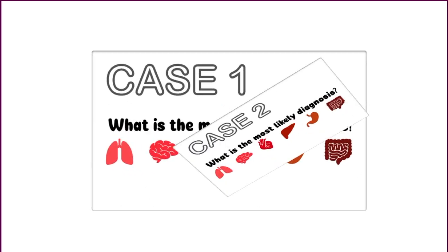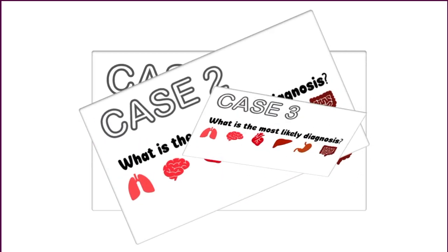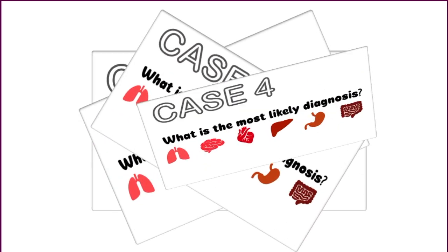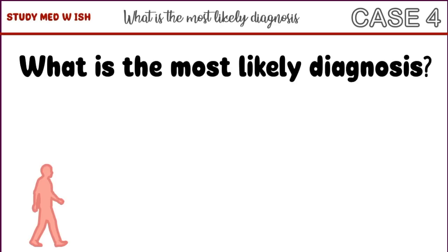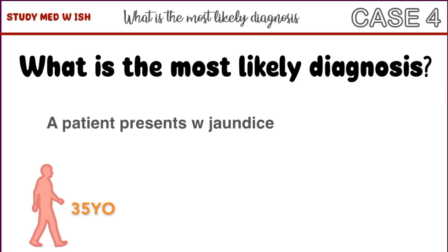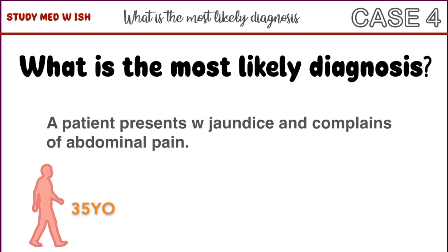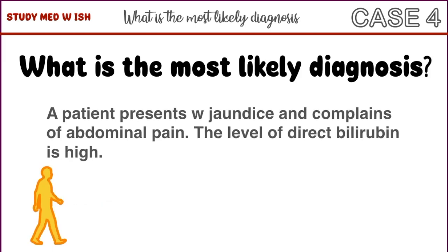Hey everyone, welcome back. This is the fourth case in our series, What's the Most Likely Diagnosis. Today, we have a patient who presents with jaundice and has abdominal pain that started four hours ago. We find out that the level of direct bilirubin is high in this patient.